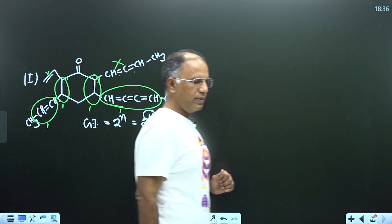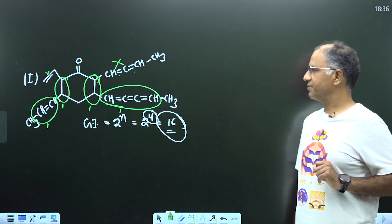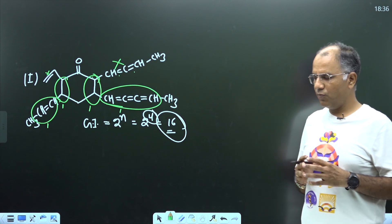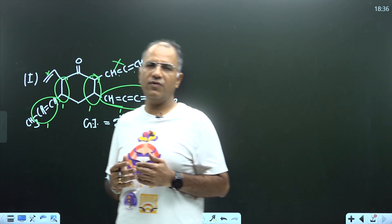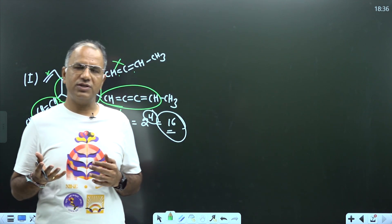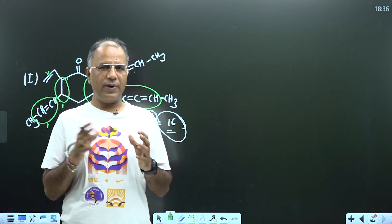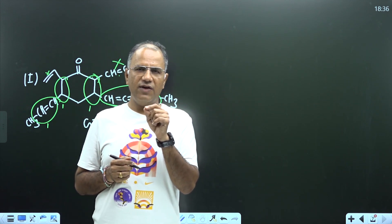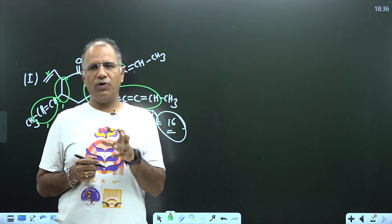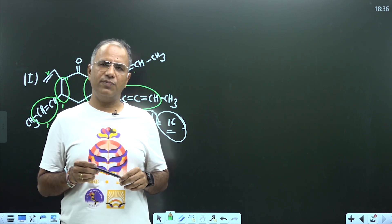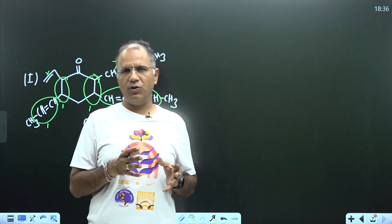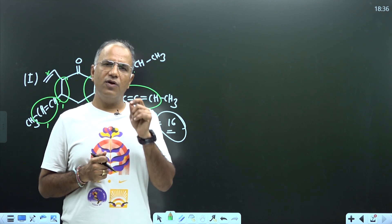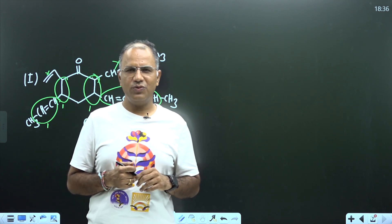For this final example, identifying which bonds show GI: this will show GI, this will show GI, this will not show GI, this will show GI, and this will show GI — the even pi bond will not show GI. So n=4 and the total geometrical isomers are 2⁴=16. That is all for geometrical isomerism. For more practice, use your coaching or school material, or join the DPP section — fill the Google form to receive the DPP PDF and video solution link via WhatsApp group or Telegram channel.